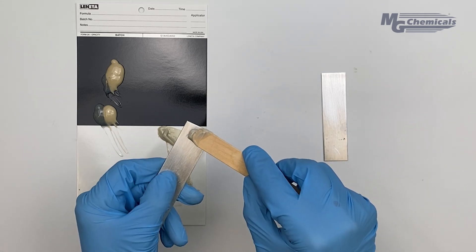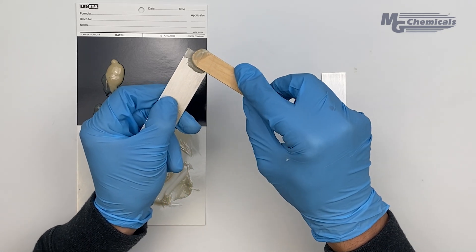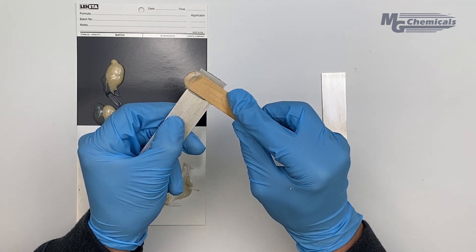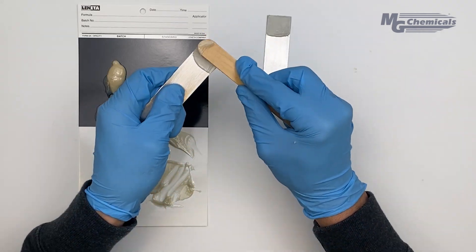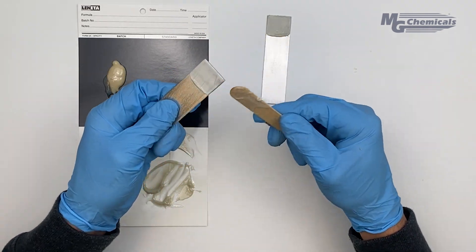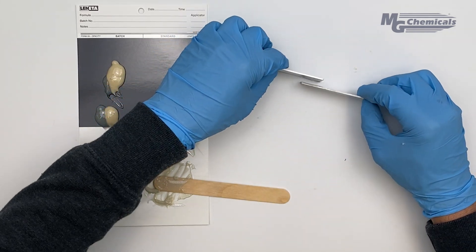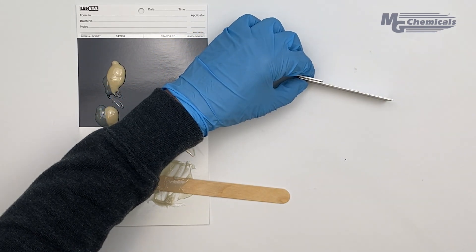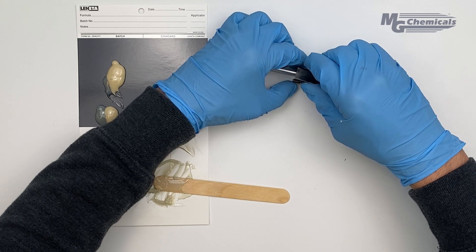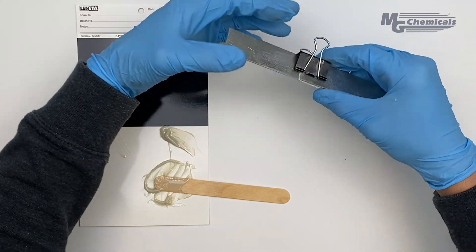Now apply the paste onto the substrates you want to bond. Use an ample amount of adhesive over the entire surface area you want bonded. Trowel the adhesive smooth as shown to ensure you have complete coverage over the entire surface of the substrate. For best results try and apply compression onto the bonded surfaces.